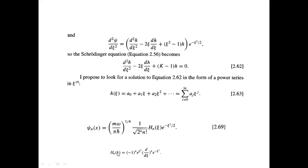You can generate all the Hermite polynomials — H for n equals 1, 2, 3, 4, and so on — by substituting the value of n and performing these operations, which gives you all the solutions.